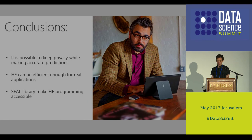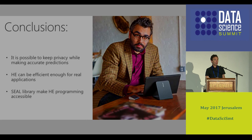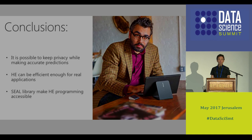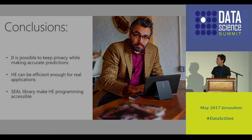To sum up: it is possible to keep privacy while making accurate predictions, so value and privacy are not necessarily contradicting terms - we can bridge between them. Homomorphic encryption can be practical. Many people treat it as a nice theoretical toy, but I hope I managed to convince you that at least for some applications it's already practical. If you're interested in venturing into this world of homomorphic encryption, you're welcome to use our library - it's open source and we'll be happy to hear your feedback. Thank you very much.